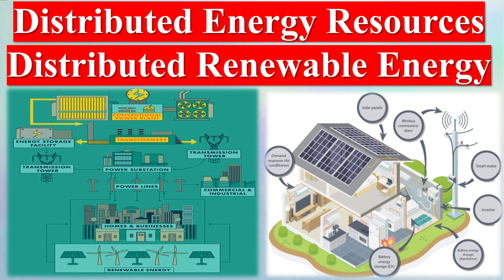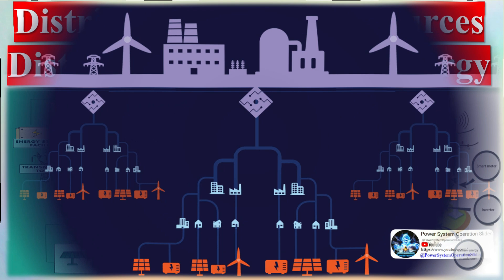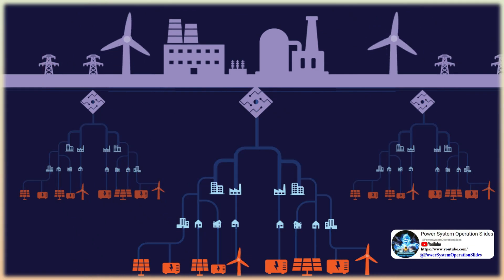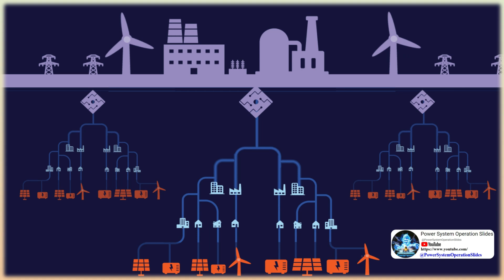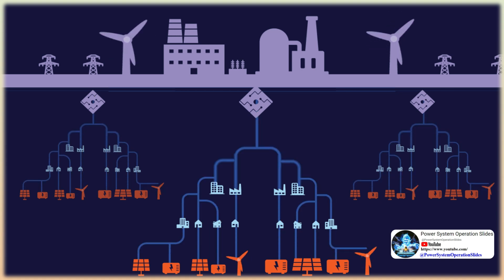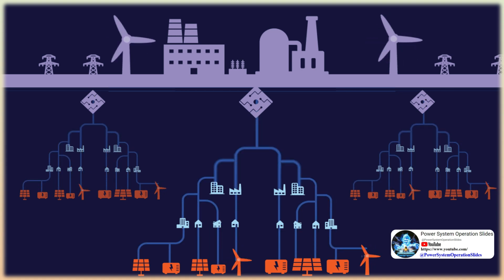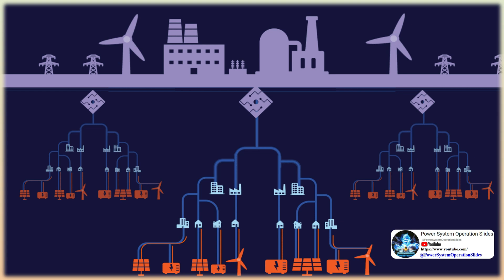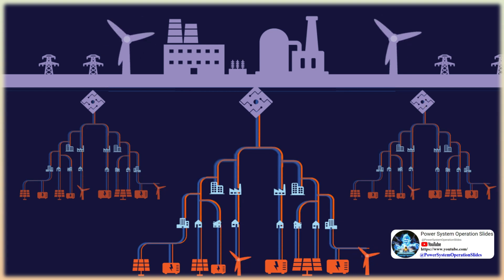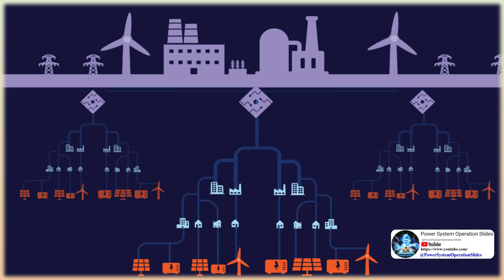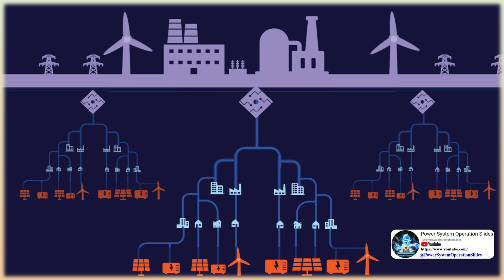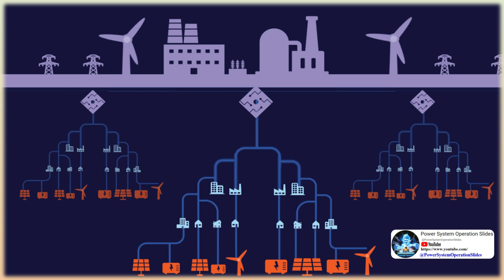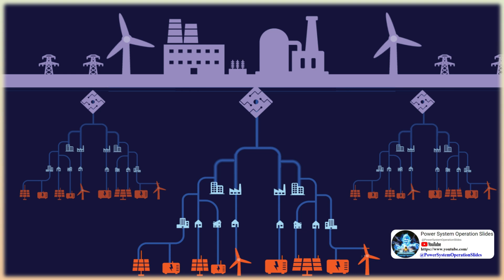In the age of disruptive technologies, one often encounters two similar acronyms that represent two distinct ideas. The DER and DRE conundrum is one such example. While DER is distributed energy resources, DRE stands for distributed renewable energy. DRE is renewable energy such as wind, solar, biomass, etc., which is interconnected to the distribution network — typically the electricity network where consumers get their power from.